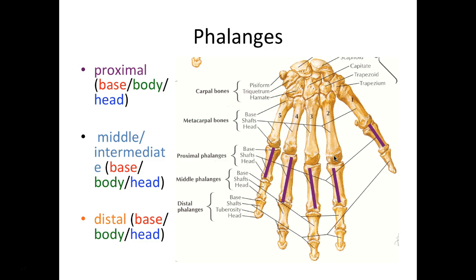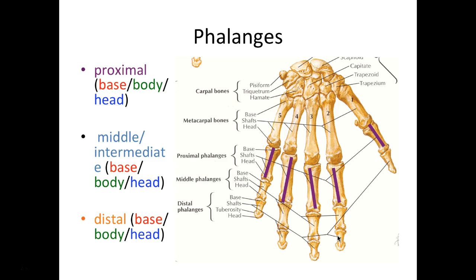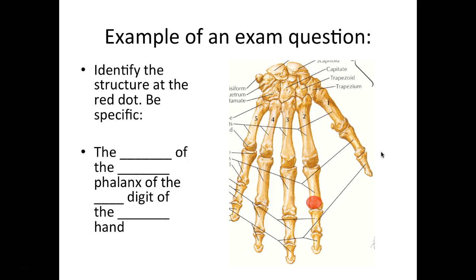Beyond that we have our phalanges. We have three different types: the proximal phalange, the middle or intermediate phalange, and the distal phalange. Each of these has a base, body, and head. Notice that digit number one does not have a middle phalange. On a practical exam, a structure will be marked on a hand bone and you'll need to fill in: the blank of the blank phalange of the blank digit of the blank hand.